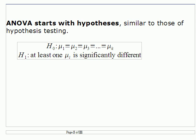We start with our hypotheses. The null hypothesis is that every one of the means across all the different treatment groups is identical — in other words, none of the treatments will produce significant differences. The alternative hypothesis is that at least one of the means is significantly different from the others. We're starting with the idea that all treatment group means are going to be, if not identical, very close together.